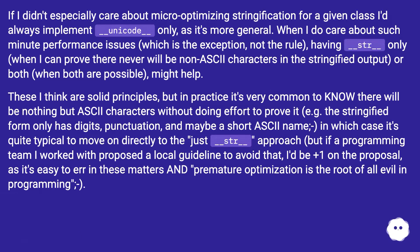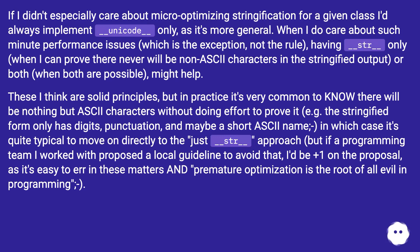If I didn't especially care about micro-optimizing stringification for a given class, I'd always implement __unicode__ only, as it's more general. When I do care about such minute performance issues — which is the exception, not the rule — having __str__ only when I can prove there will never be non-ASCII characters in the stringified output, or both when both are possible, might help.